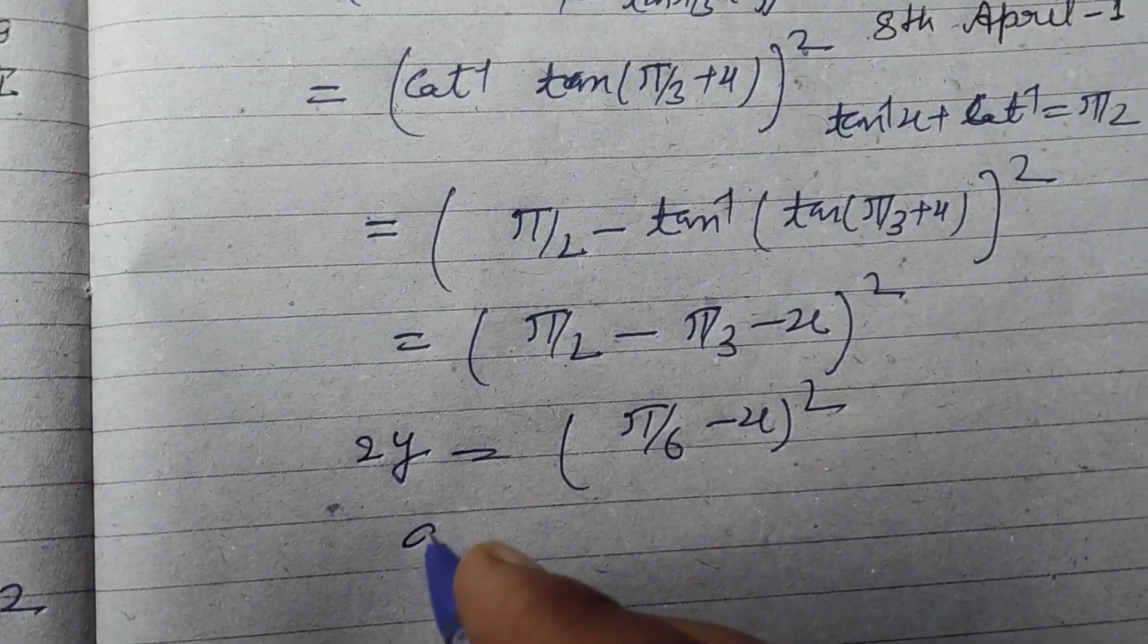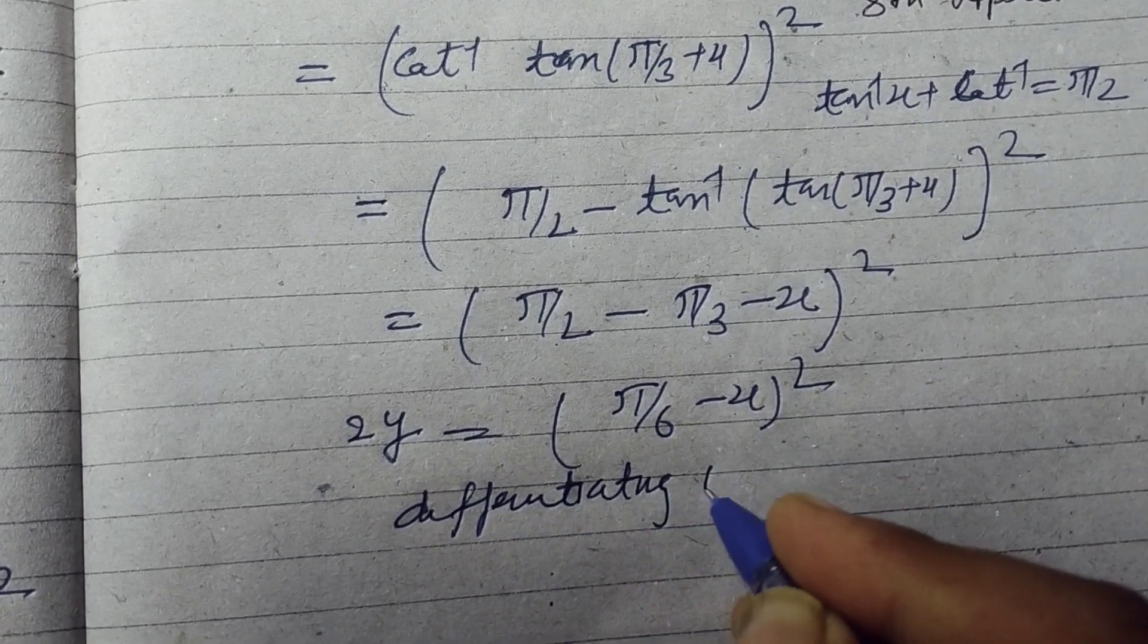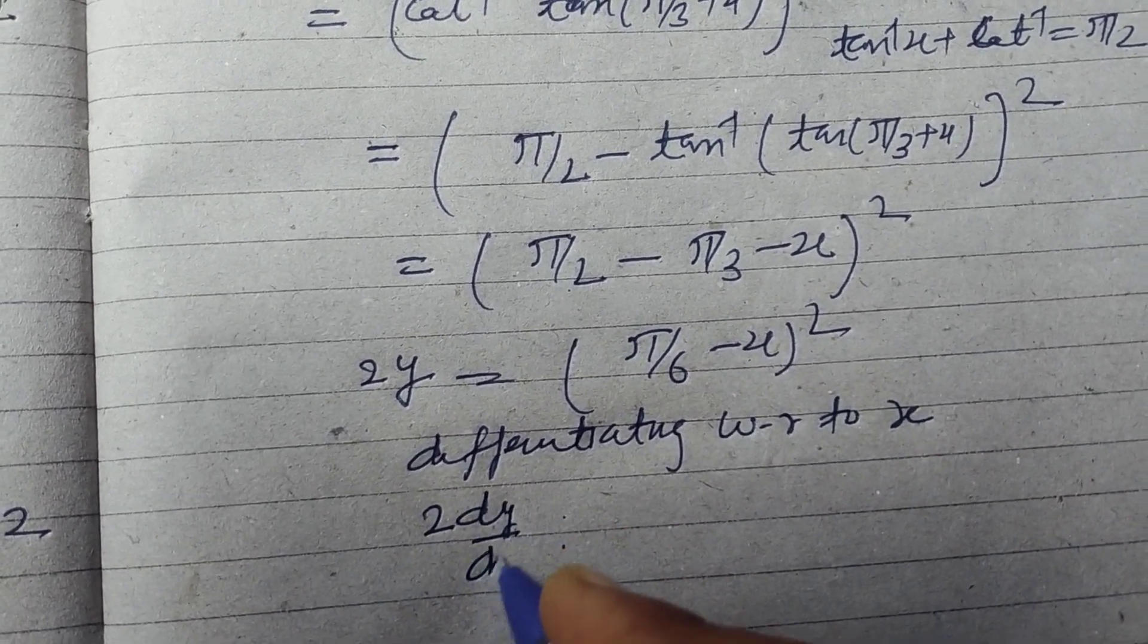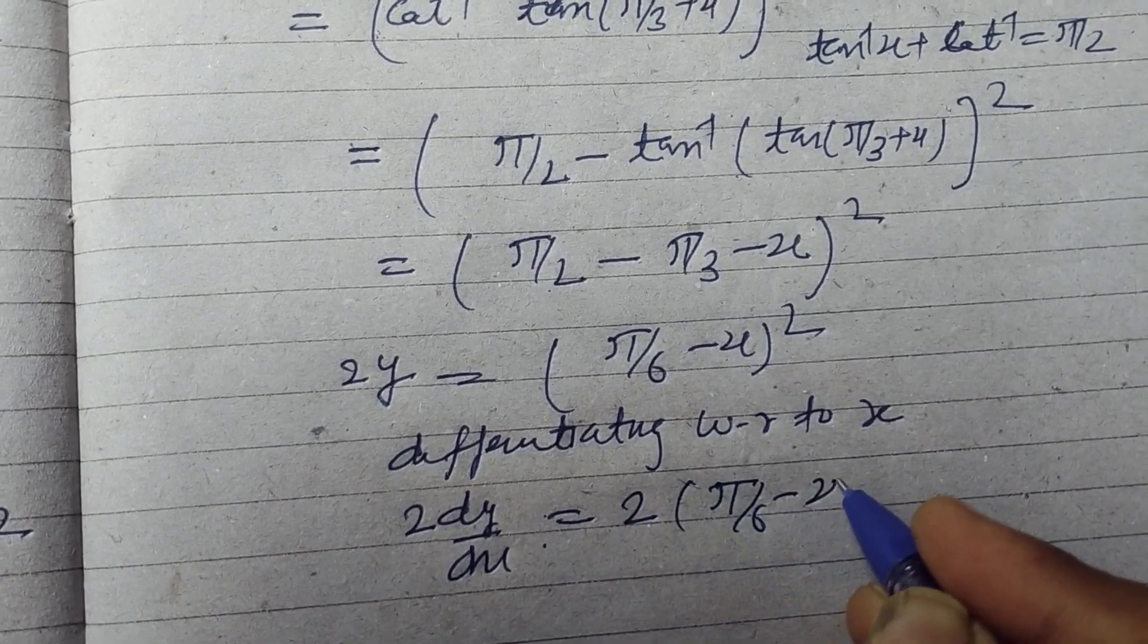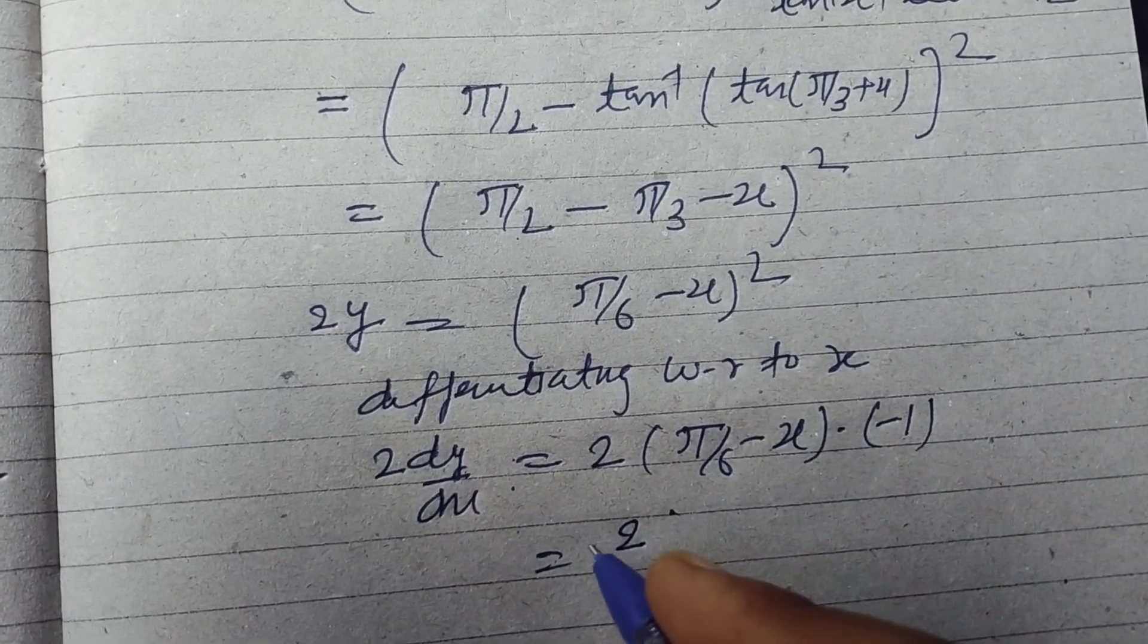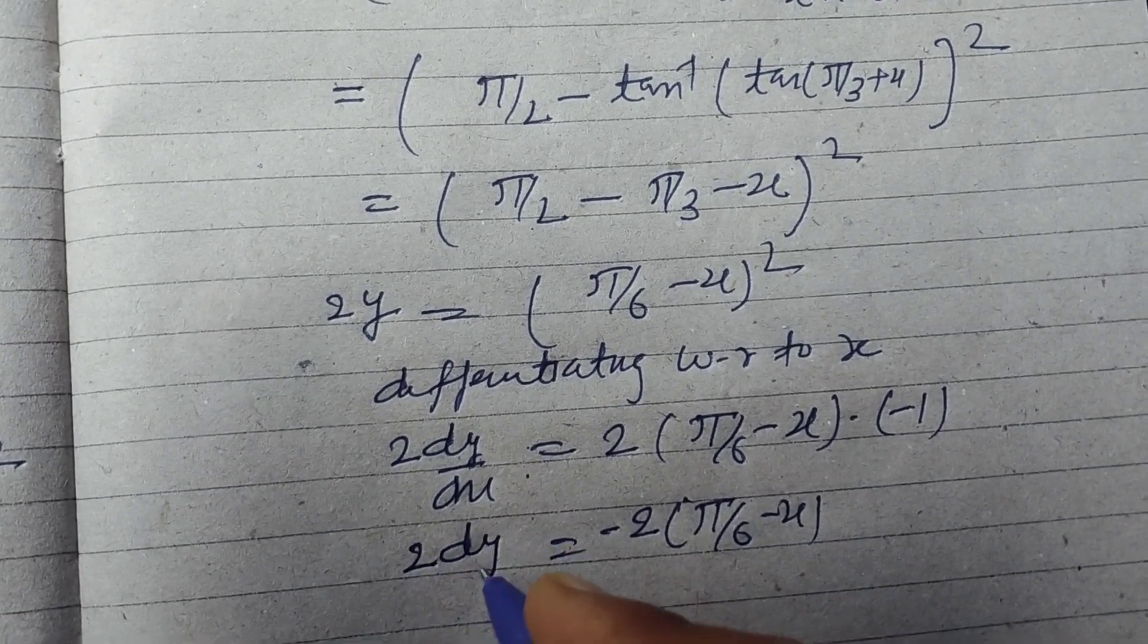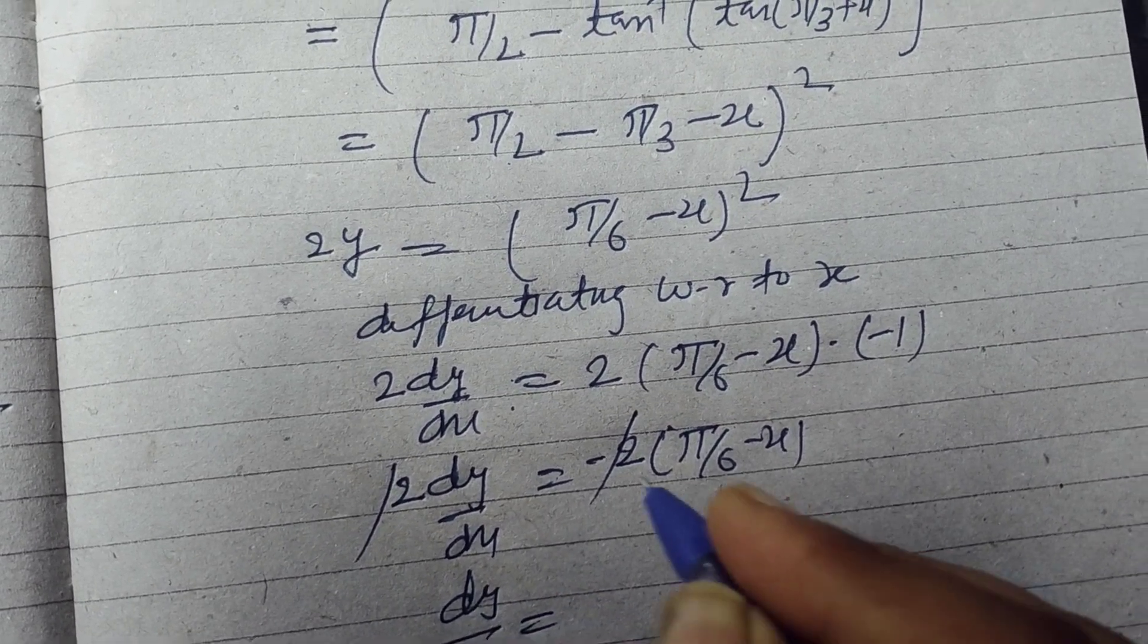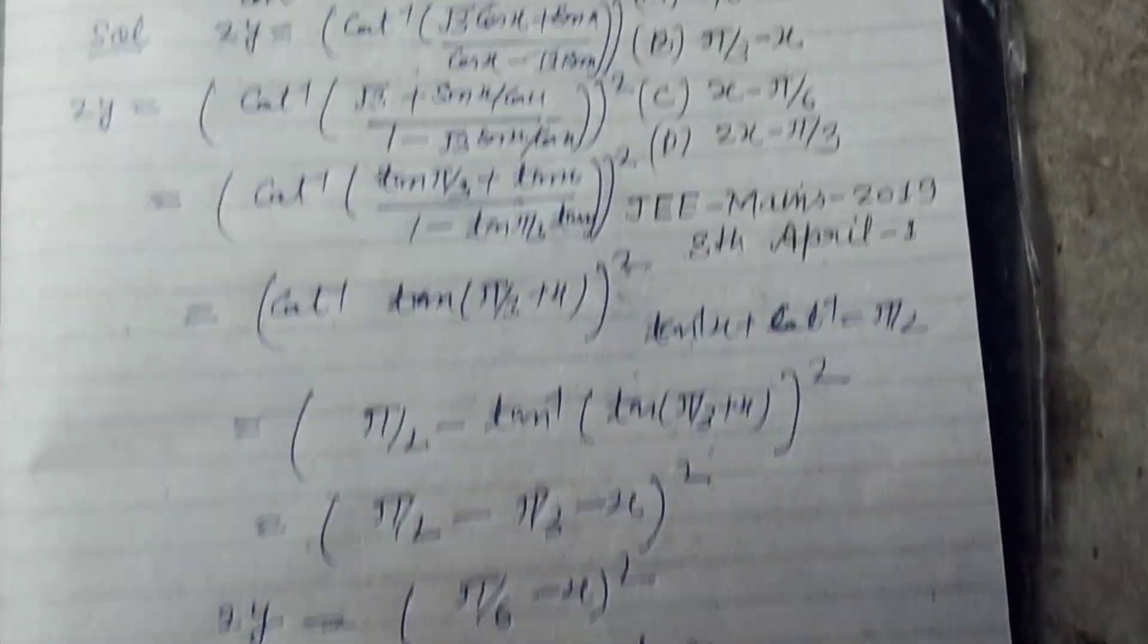Now differentiating with respect to x, 2 dy/dx equals negative 2. The 2s cancel, therefore dy/dx is equal to x minus π/6.